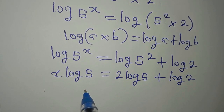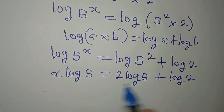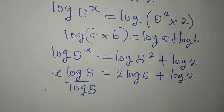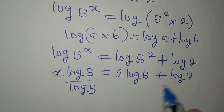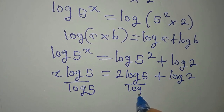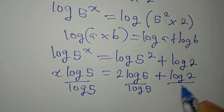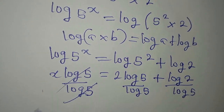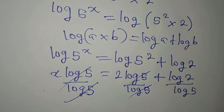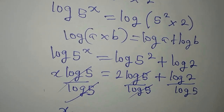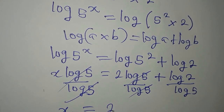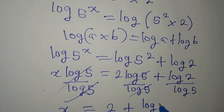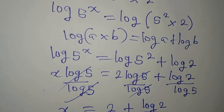Now we divide all through by log 5, since we want to make x the subject. Dividing this by log 5 and this by log 5 — the log 5 terms cancel — so we get x equals 2 plus log 2 over log 5.